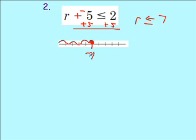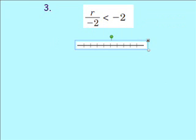So any number from seven and lower, including seven, is a solution. Number three.